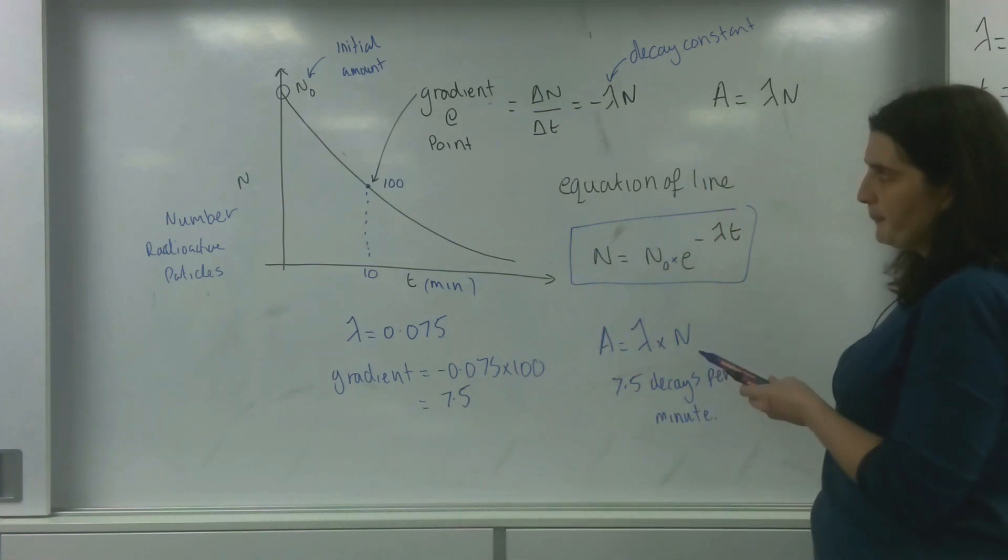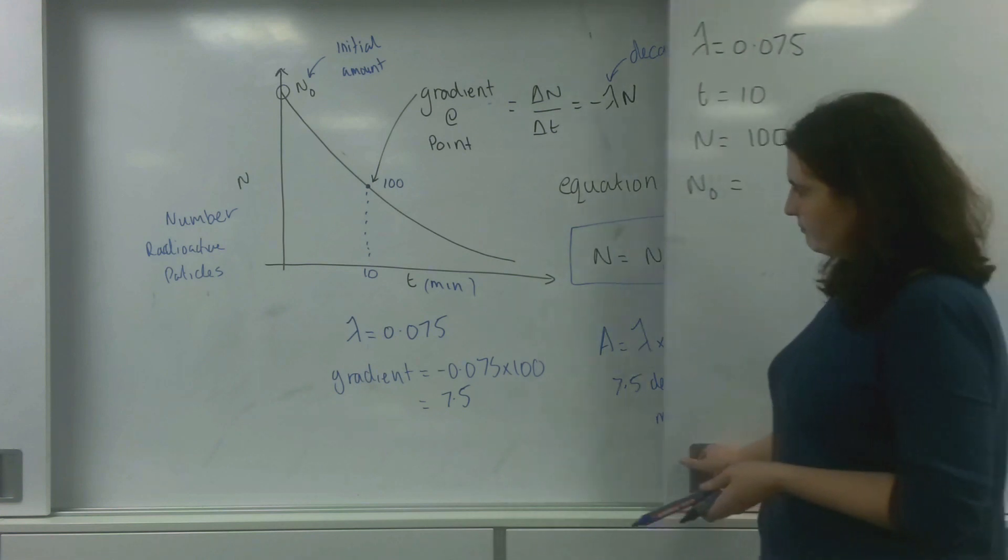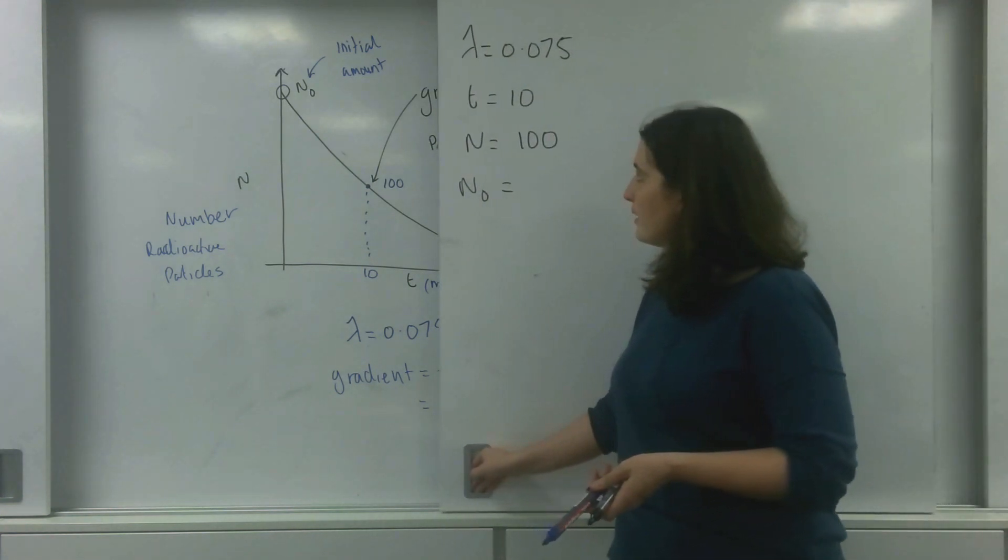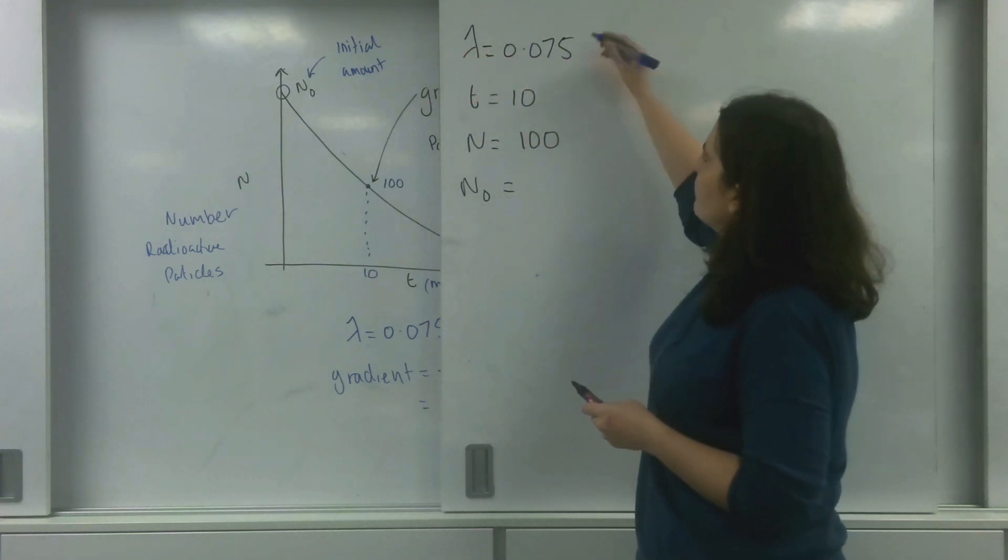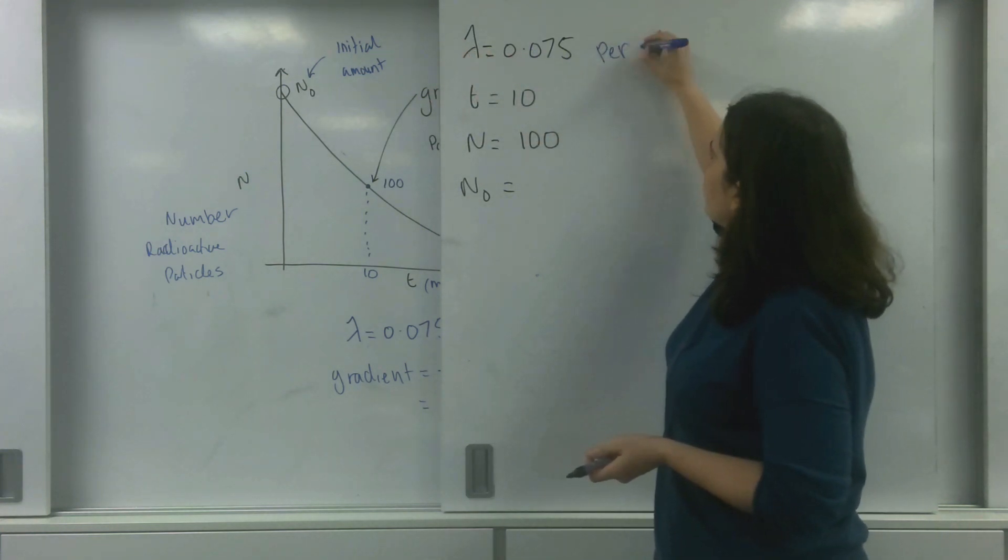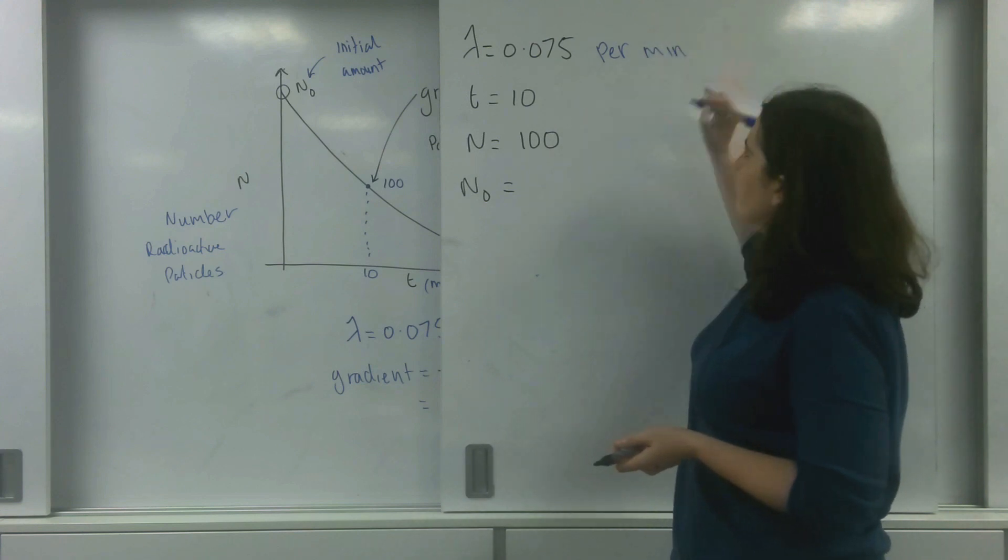I'm going to take the information we have here. So I know that my decay constant is 0.075 decays per minute, or min to the minus 1.